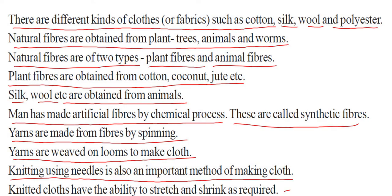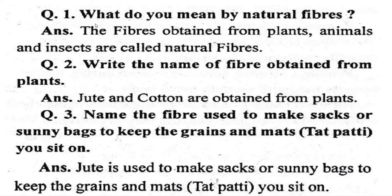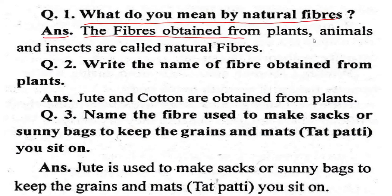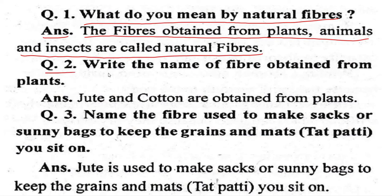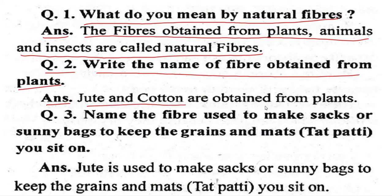Question: What do you mean by natural fiber? Answer: The fibers obtained from plants, animals, and insects are called natural fibers. Question: Write the name of fibers obtained from plants. Answer: Jute and cotton are obtained from plants.